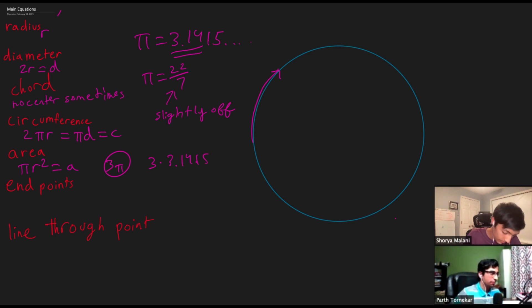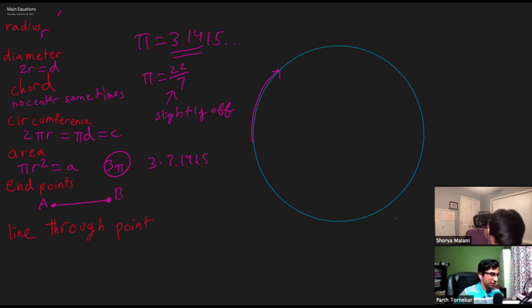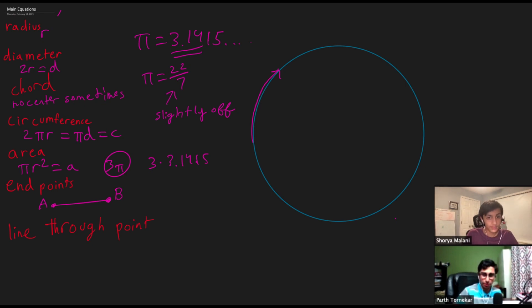Now we're going to be moving on to endpoints. An endpoint is basically just a point from one area to another — this point is labeled A and this other point is labeled B. Pretty simple, pretty self-explanatory.